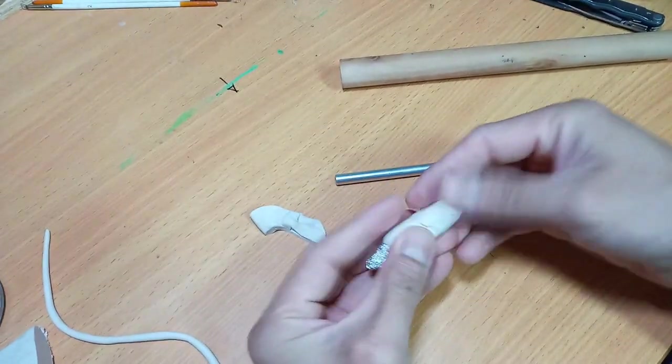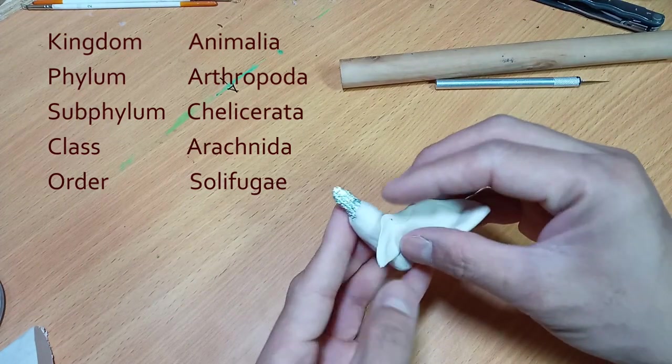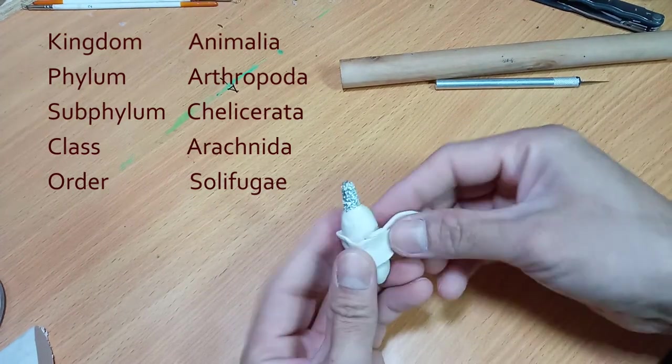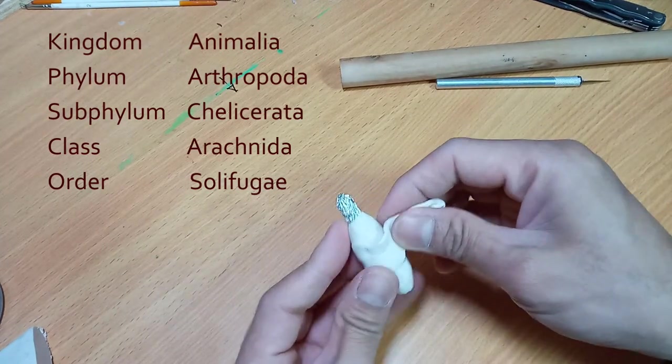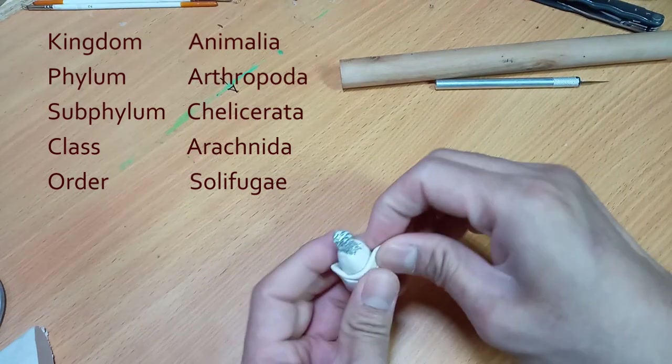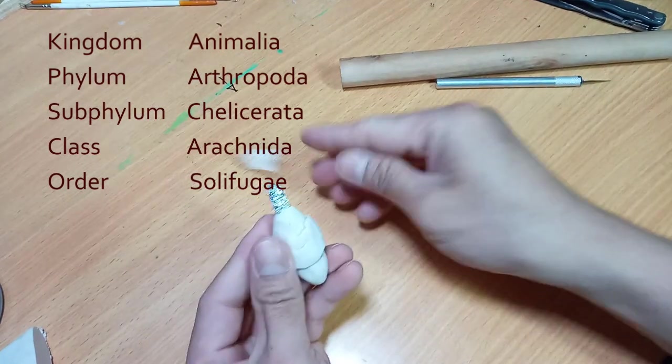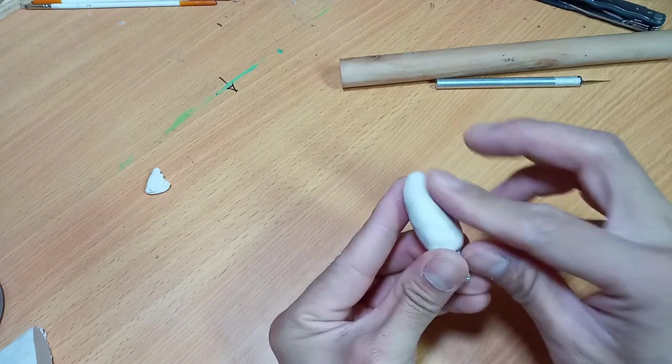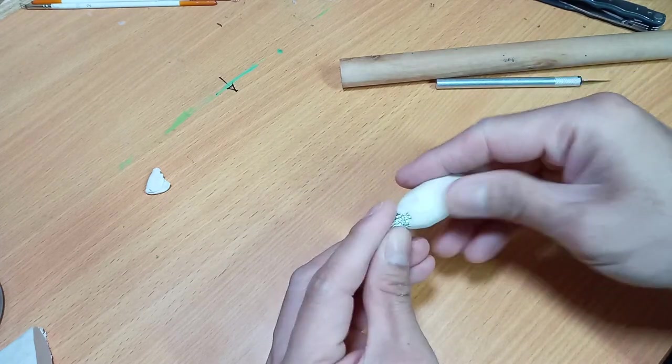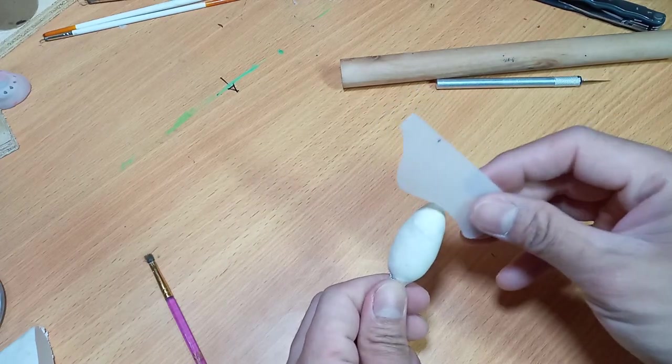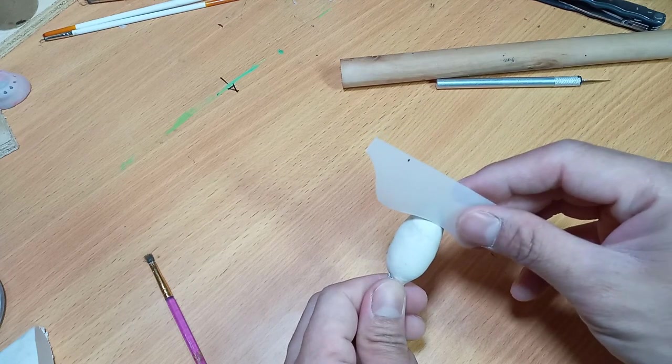Camel spider belongs to order Solifugae, class Arachnida. Sun spider, wind scorpion, and solifugid are its common nicknames. It's not a spider nor a scorpion. Until now, entomologists are arguing about its identity, but definitely they belong to a totally different taxon.